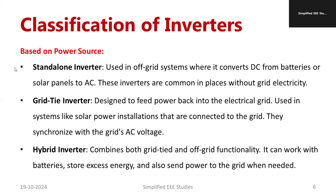According to the power source, we can classify inverters further. We have the standalone inverter — here we have only one AC load, and from the solar panel a DC-to-DC converter is used, followed by a DC-to-AC converter, which is the inverter, and you operate the load independently. That is called a standalone inverter. Another one is the grid-tied inverter — whatever power we produce from our system is supplied to the grid using a grid-tied inverter.